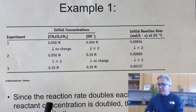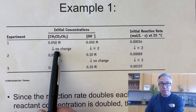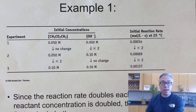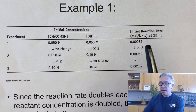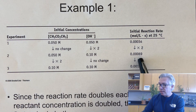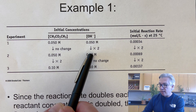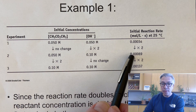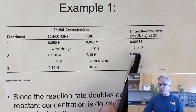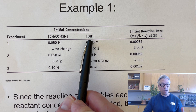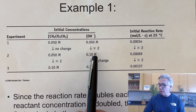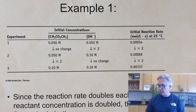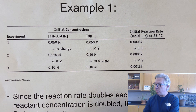If I run the trial again, keeping one concentration constant but doubling the other — doubling the concentration of OH — and the rate also doubles, that tells me the rate is proportional to the concentration of OH. That's an equal proportion, so I can say that is first order with respect to OH.